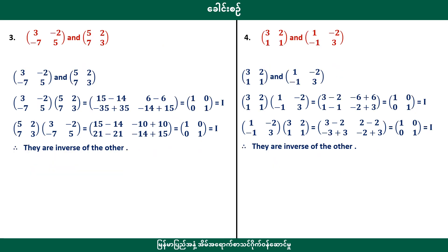In this case, we will take 3 minus 2 minus 7, plus 3 times 5. We need 3 minus 2 minus 7, plus 3 minus 7, plus 4. The result gives the identity matrix — 1, 0, 0, 1 — confirming they are inverses of each other.